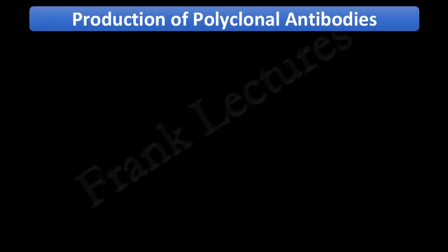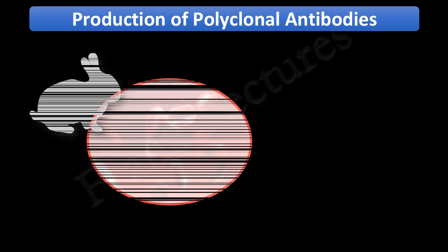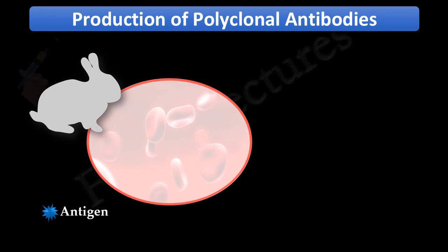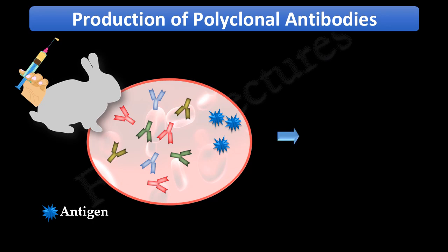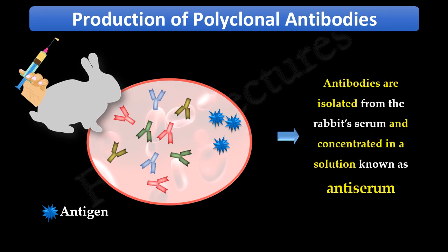The main source of polyclonal antibodies is human or animal blood. For polyclonal antibody production, an organism — for example, a rabbit — is immunized with the antigen against which we need polyclonal antibodies. The rabbit is injected with the antigen one or more times. The rabbit's immune system responds by producing antibodies, which are then isolated and extracted from the rabbit's serum. This way we get antiserum containing polyclonal antibodies targeted against the desired antigen.